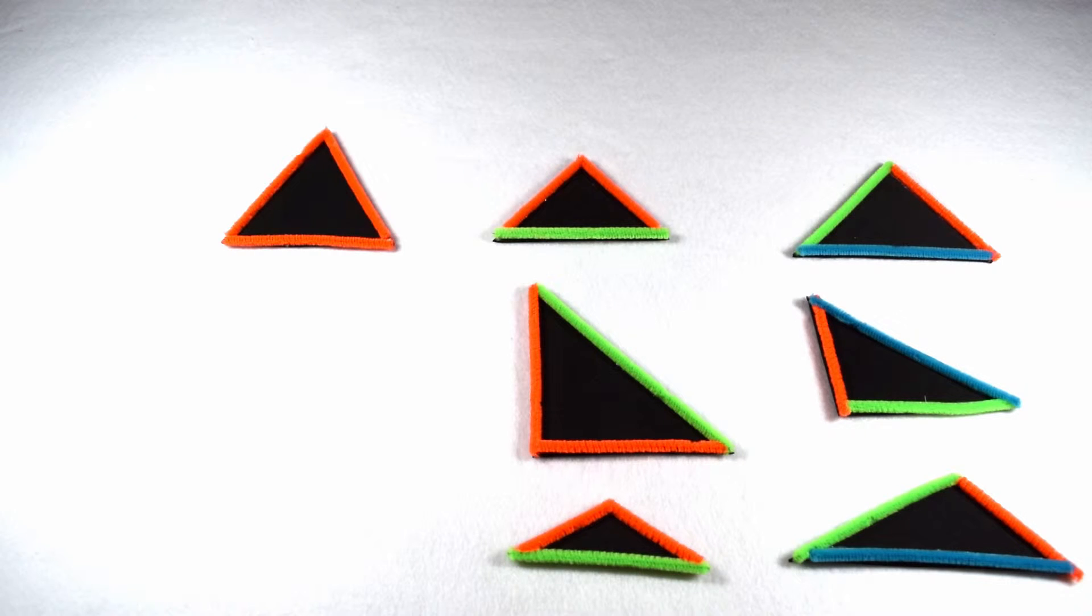To give a triangle its most specific name, we can classify it by both its side length and its angle measures. Since there are three ways to classify triangles by side lengths and three ways to classify triangles by angle measures, that means we should be able to create nine different triangles. However, only seven of them are possible.